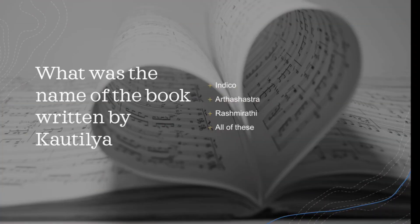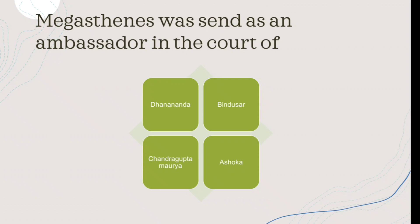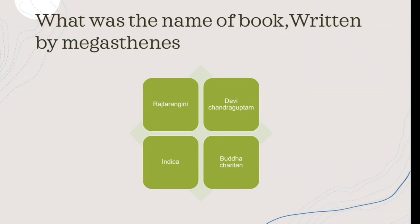What was the name of the book written by Kautilya? Next question: What was the name of the book written by Megasthenes? The right answer is Indica.